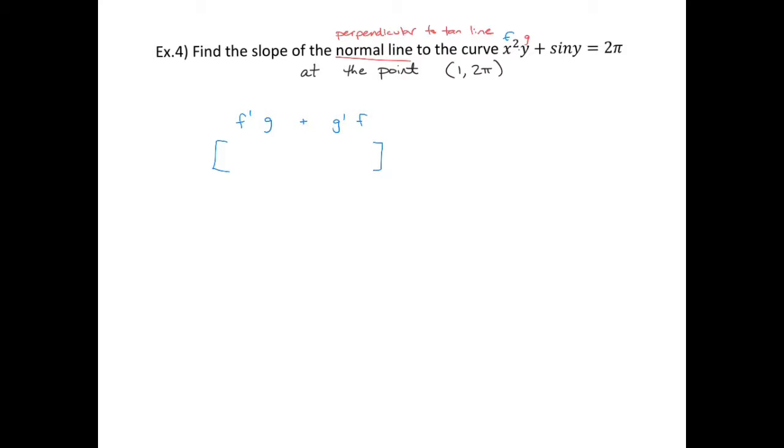The derivative of F is 2x and leave G, leave Y by itself. The derivative of G, which is Y, is 1·dy/dx and leave F as it is. The derivative of sin Y is cos Y, and because Y is a function we have to multiply by the derivative, which is dy/dx.